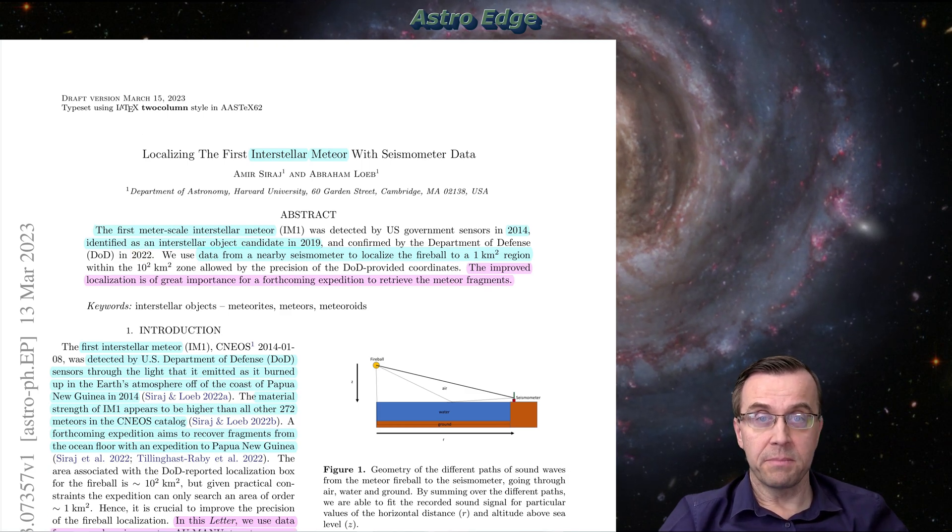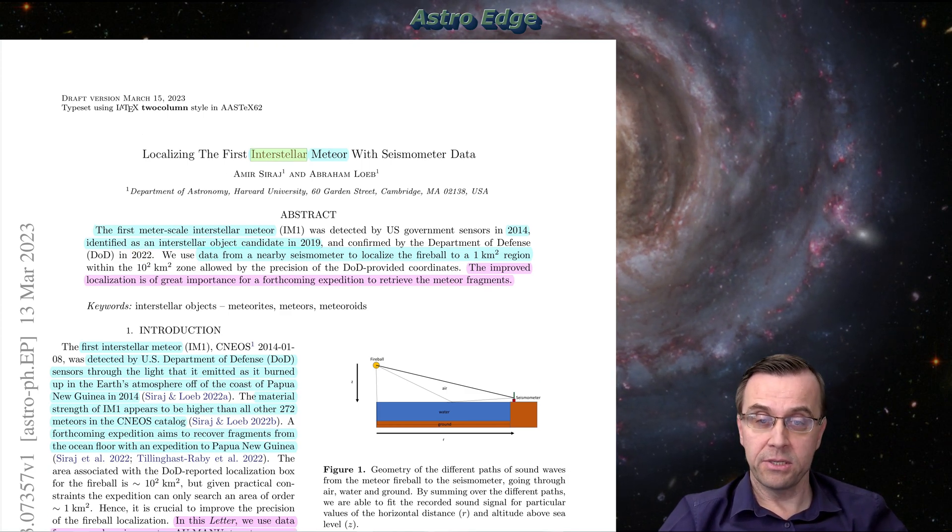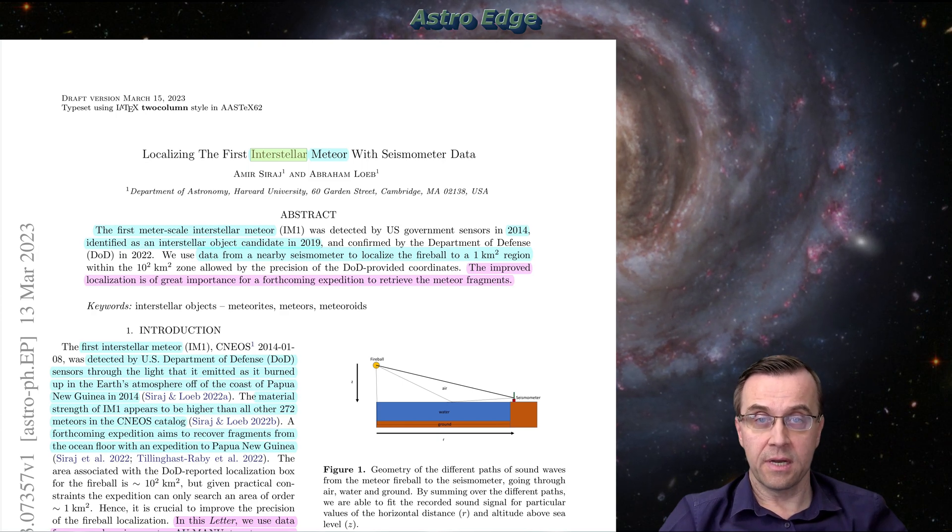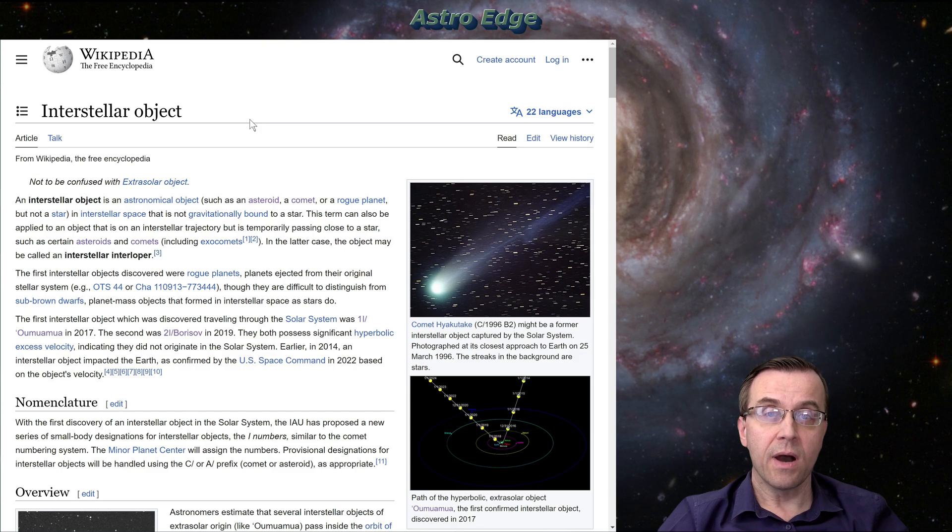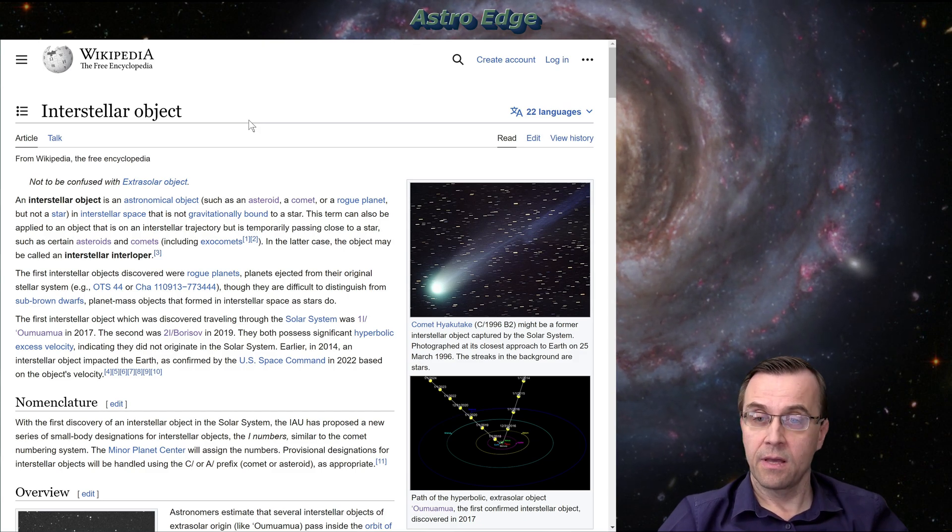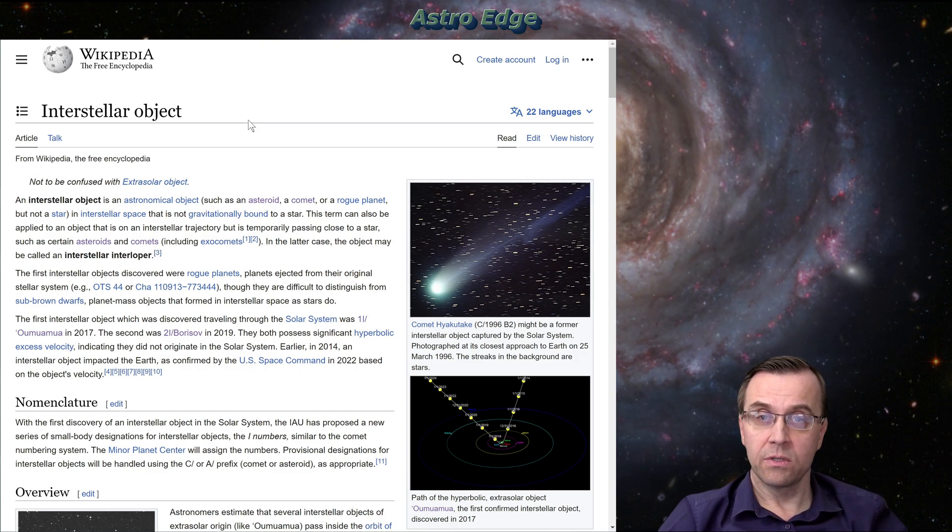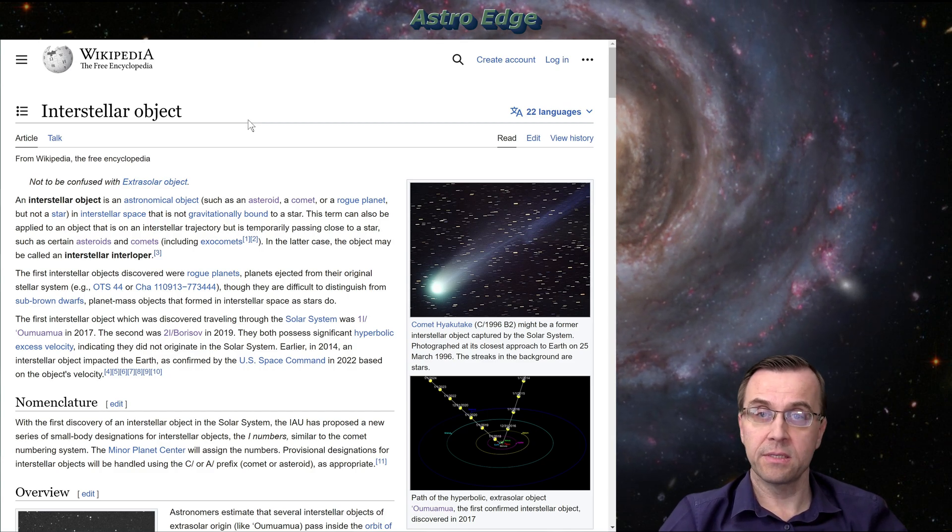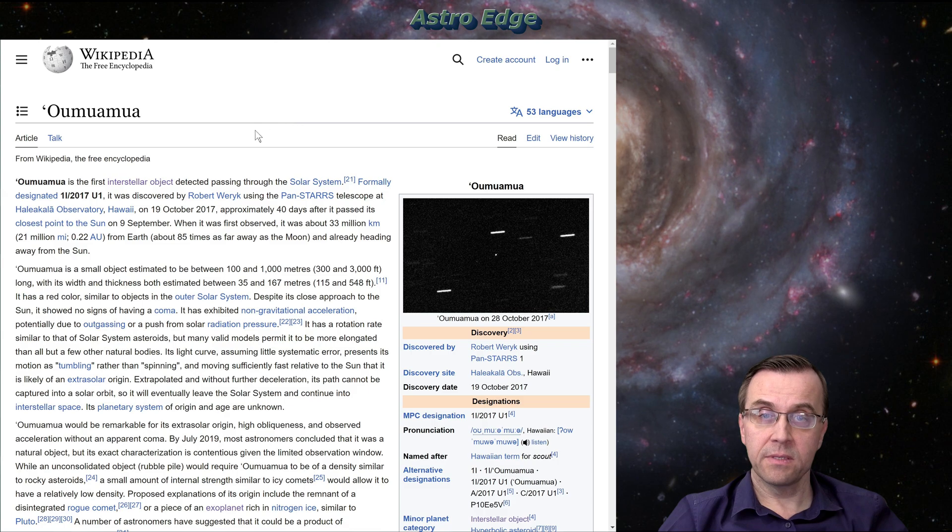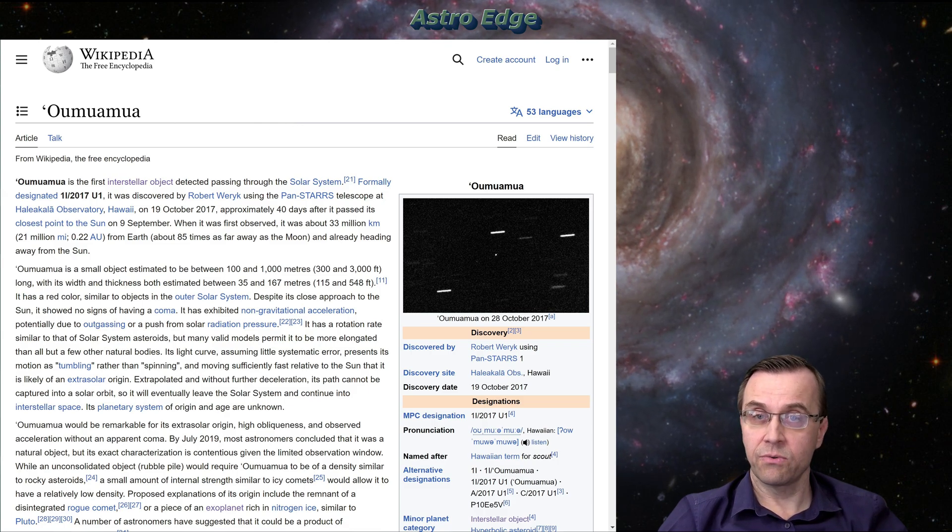And the reason it was classified, because it was an interstellar meteor, the first of its kind discovered. Interstellar means that it came from outside of our solar system. There are only a few objects discovered so far which are known to have come from the interstellar space.